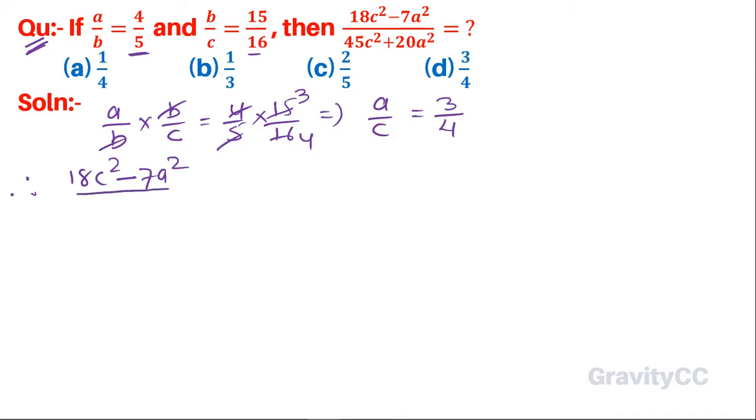Therefore (18c² - 7a²)/(45c² + 20a²) equals... Let a = 3k and c = 4k. Then we have 18(4k)² - 7(3k)² over